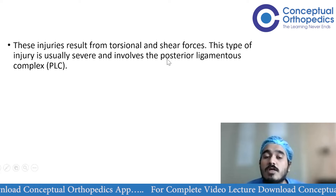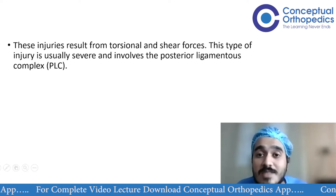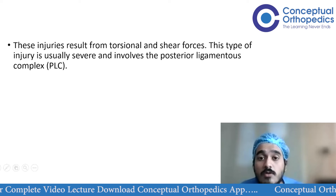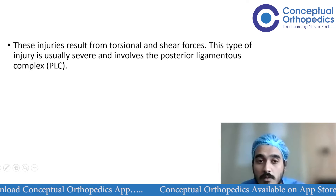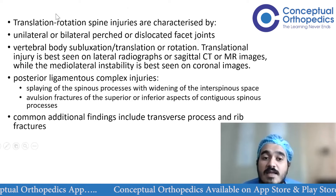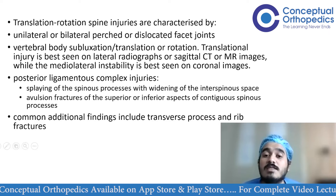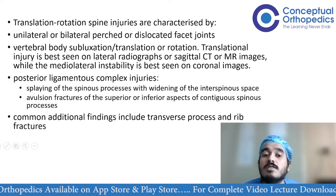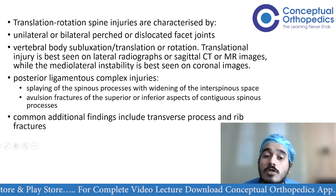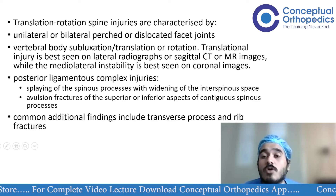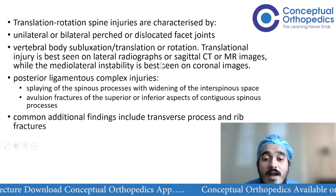These injuries should be managed surgically. The aim is to realign the column so that the patient is at least able to sit or stand with support, even if there is no power in the lower limbs. They are characterized by unilateral or bilateral perched or dislocated facets, vertebral body subluxation, and translation and/or rotation — multiple components making these three-dimensional injuries.